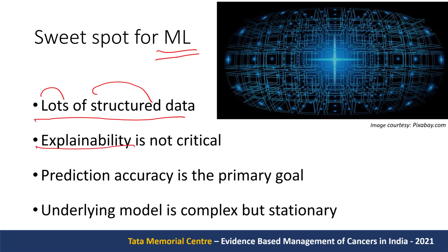If explainability is crucial, we probably do not want to go to machine learning — most useful ML models are not explainable. If prediction accuracy is the primary goal and we want complex predictions, ML is good but don't expect explainability. The underlying model should be complex but stationary, meaning it doesn't change over time. An example of a non-stationary model: recognizing age by clothing, where fashions change. But the underlying biology of how tissues look in medical images does not change over time.